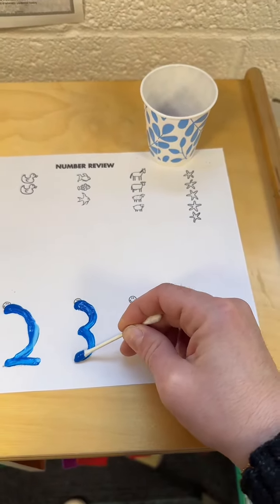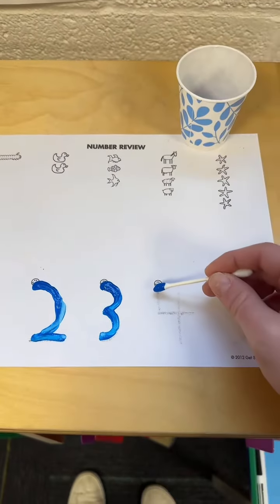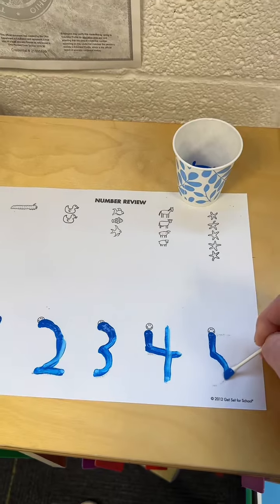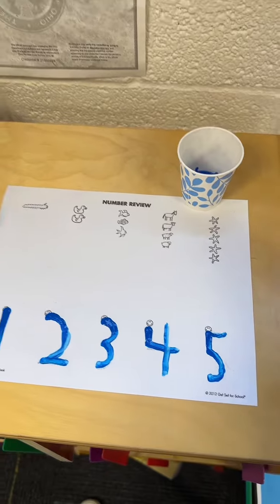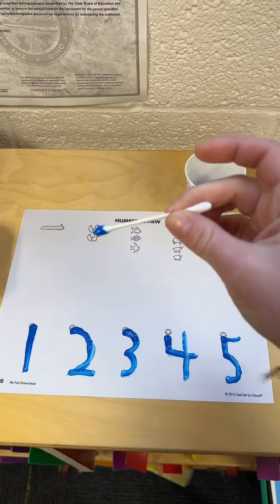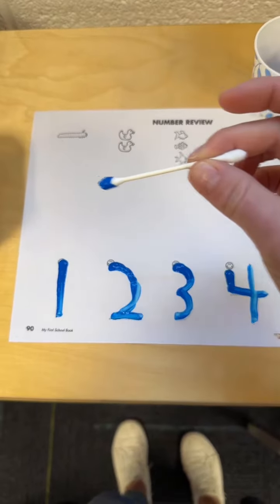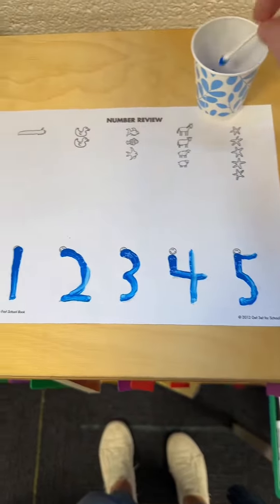Next, students went to the table and they were tracing all of the numbers that we've learned so far, one through five, using paint and Q-tips. This only took about three to five minutes, but it was very beneficial. First, students wrote their name on the back, and then they turned it over and traced all of the numbers.